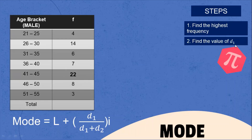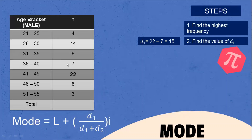Next step, find the value of D₁. D₁ is equal to the highest frequency minus the frequency above it. That is 22 minus 7, which equals 15. So D₁ = 15.